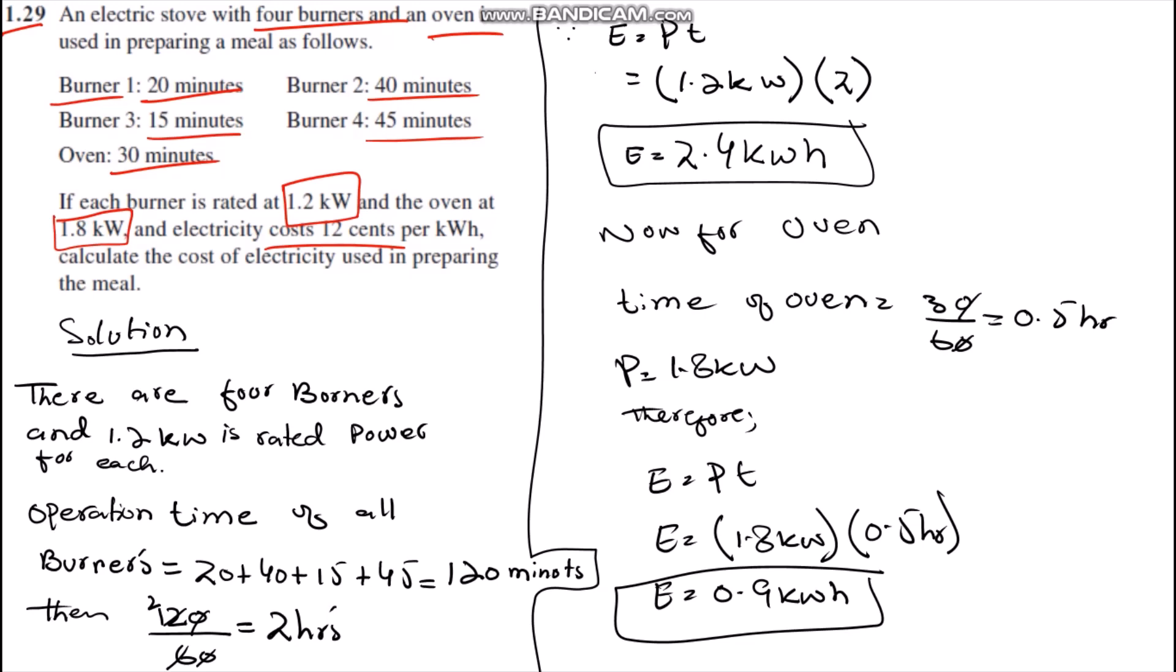In order to find the electricity cost, first of all we have to calculate energy in kilowatt hours. To calculate energy in kilowatt hours, we have to convert the time of burners or ovens into hours.